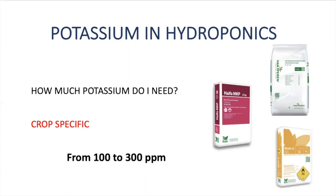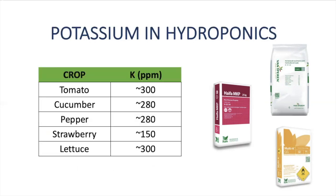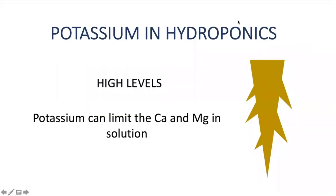In fruiting crops, we tend to increase potassium in the generative phase. Here is an example of potassium levels in fruiting crops and also leafy greens like lettuce, so you can see how different crops have different requirements. When potassium levels are high, potassium can affect the uptake of other nutrients — specifically calcium and magnesium — because all of these are cationic nutrients.